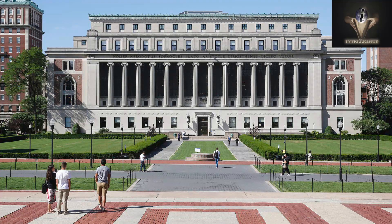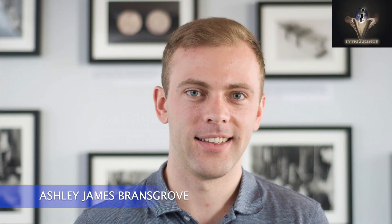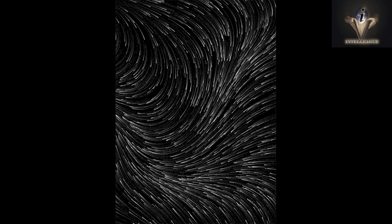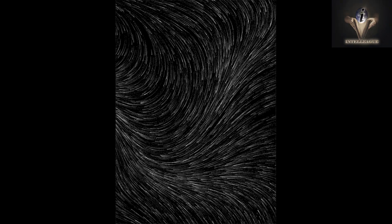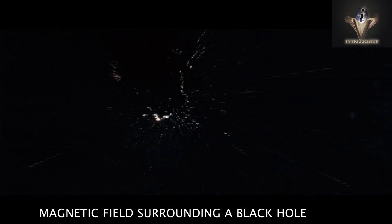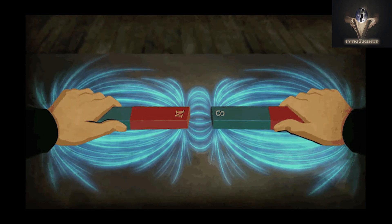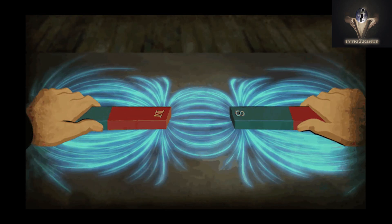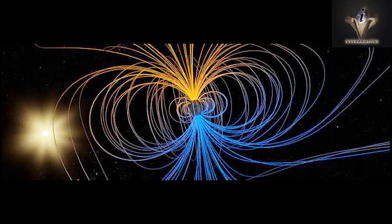The simulation performed by Columbia University researcher Ashley James Bransgrove, which included both collisionless and collisional plasmas, features a magnetic field surrounding a black hole. The magnetic field lines disconnect, reunite, and then form plasma-filled magnetic loops that escape into space or plunge into the black hole.